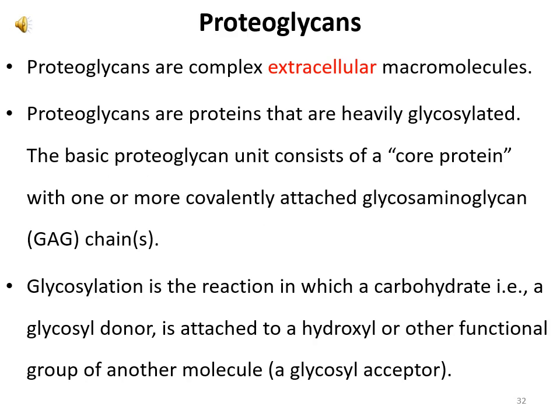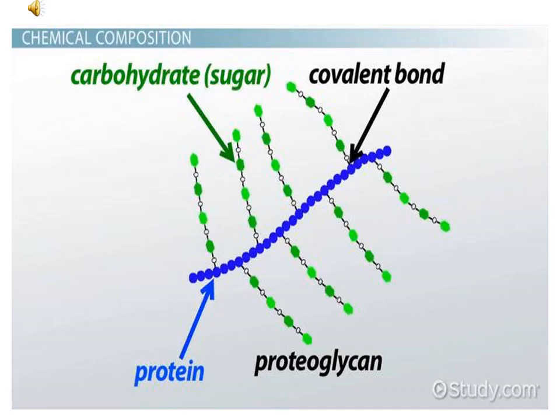Proteoglycans are complex extracellular macromolecules. They are proteins that are heavily glycosylated. The basic proteoglycan unit consists of a core protein with one or more covalently attached glycosaminoglycans. Glycosylation is the reaction in which a carbohydrate — the glycosyl donor — is attached to a hydroxyl or other functional group of another molecule — the glycosyl acceptor. The structure of proteoglycans shows a protein linked covalently with the carbohydrate sugar.